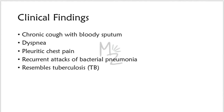Clinical findings: the main symptom is a chronic cough with bloody sputum. Other symptoms include dyspnea, pleuritic chest pain, and recurrent attacks of bacterial pneumonia — which is the secondary bacterial infection mentioned in pathogenesis. This disease resembles tuberculosis, which is caused by Mycobacterium tuberculosis. The symptoms of tuberculosis — including fever, malaise, and tiredness — are similar to those of paragonimiasis.